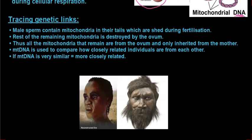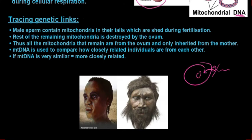Mitochondrial DNA is actually used in tracing genetic links. Male sperm contain mitochondria in their tails, which are shed during fertilization — as soon as they reach the ovum, that little tail is shed. The rest of the remaining mitochondria is destroyed by the ovum. So as soon as the sperm head is inside the ovum, the mitochondrial DNA in there is completely destroyed. Thus all the mitochondria that remain are from the ovum and are only inherited from the mother.